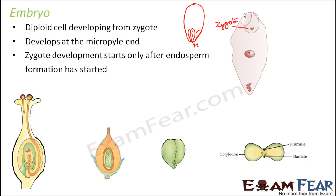The zygote development starts only after endosperm formation has begun, because for the zygote to develop into an embryo it needs nutrition, which is provided by the endosperm. Post-fertilization, the ovary turns into the fruit and the ovule turns into the seed.